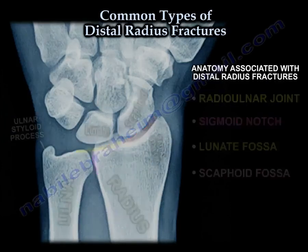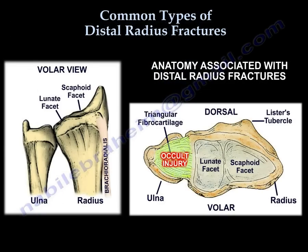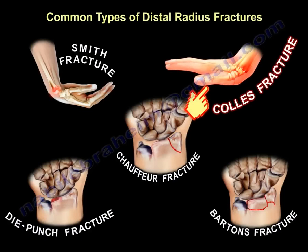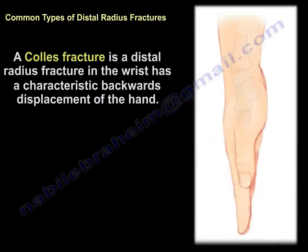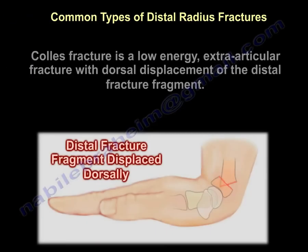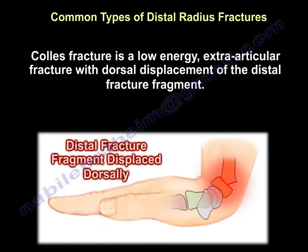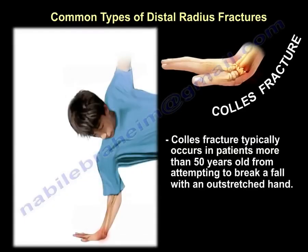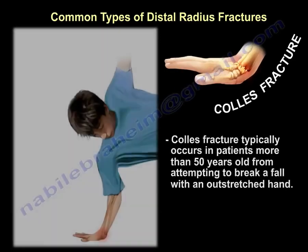We also need to consider the triangular fibrocartilage and the deforming forces of the brachioradialis. The most common type is Colles' fracture, which is a fracture of the distal radius with characteristic backward displacement of the hand. It is a low-energy, extra-articular fracture with dorsal displacement of the distal fragment. It usually occurs in patients above the age of 50 years when they attempt to break a fall with an outstretched hand.